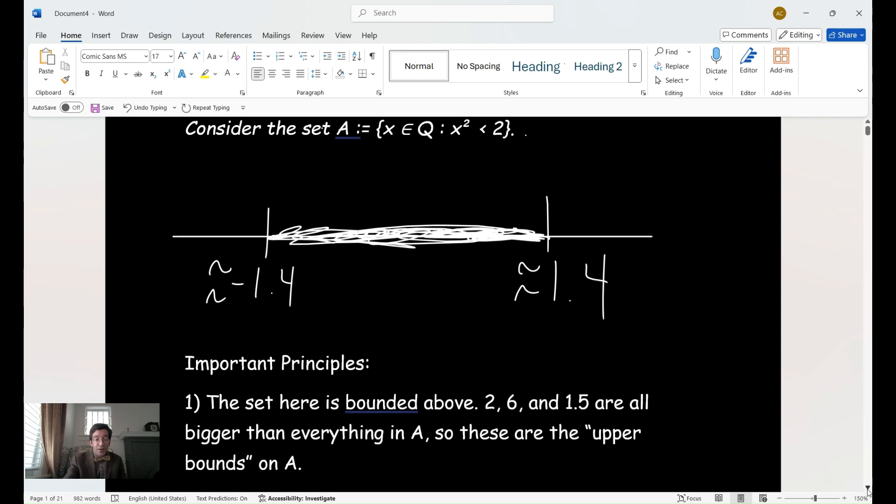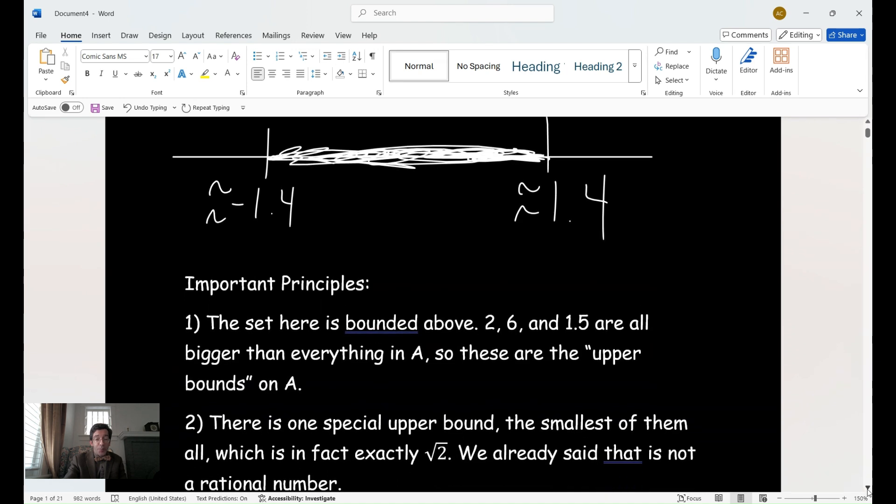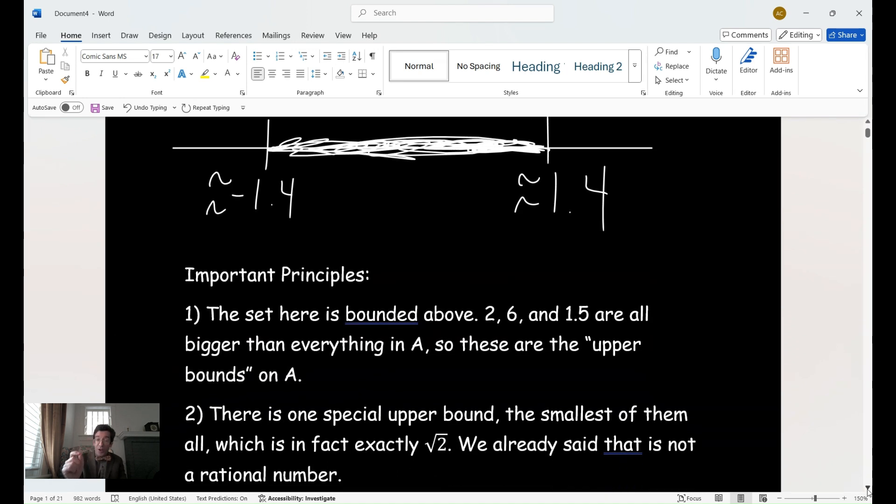The next thing to consider is there is one special upper bound, the smallest of them all, which is in fact exactly what you would have guessed, the square root of two. And we already said that is not a rational number.